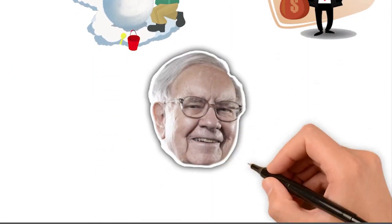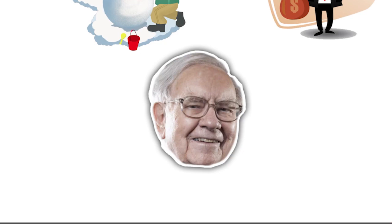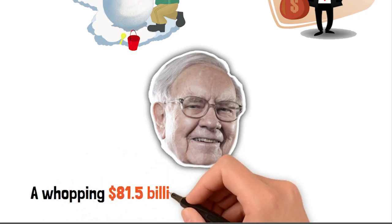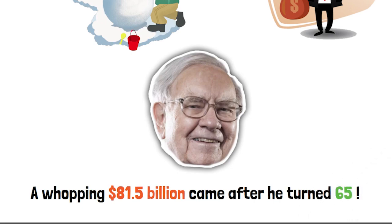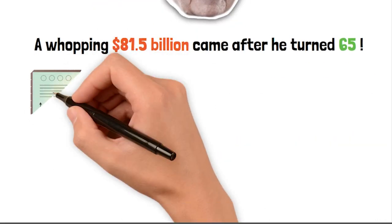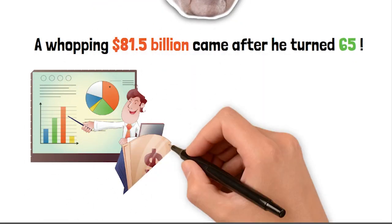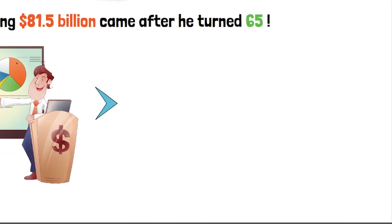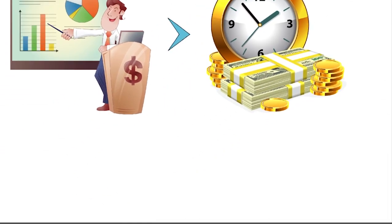Take Warren Buffett, for example. Out of his over $100 billion net worth, a whopping $81.5 billion came after he turned 65. It's mind-boggling. The secret behind its success isn't some fancy investment strategy. It's simply the power of time.